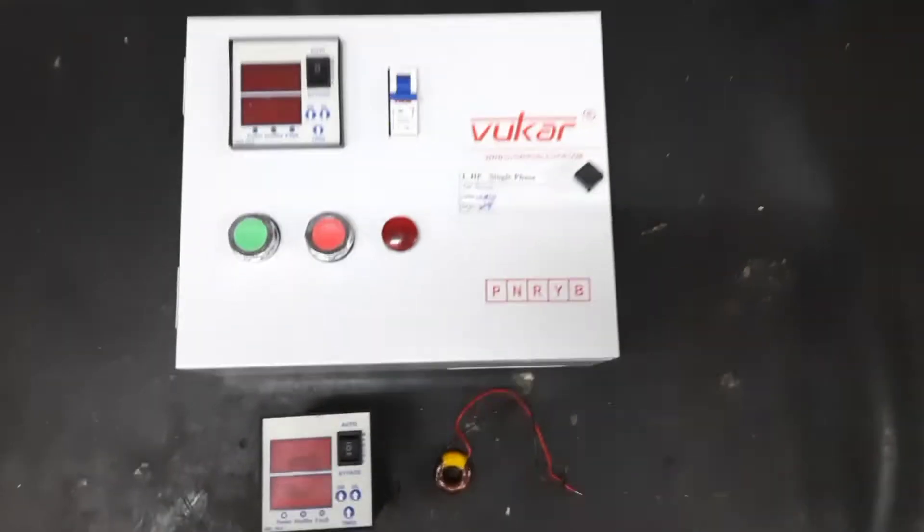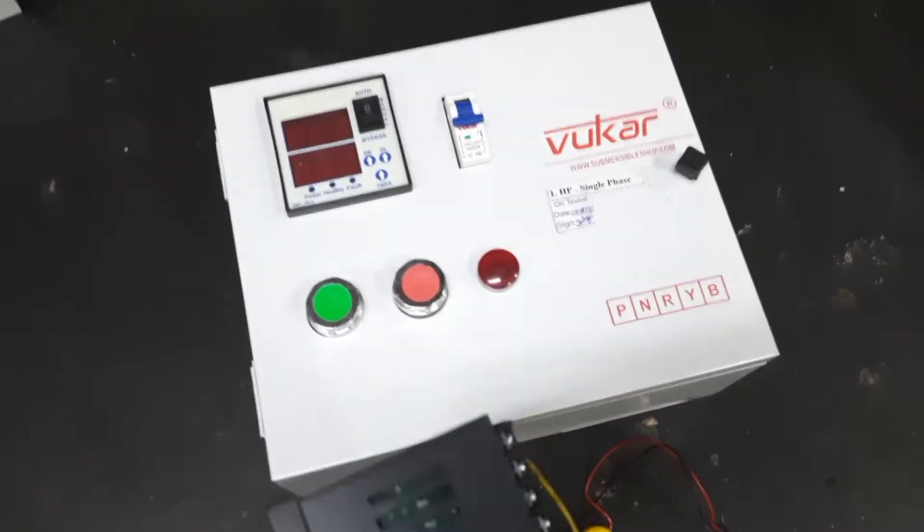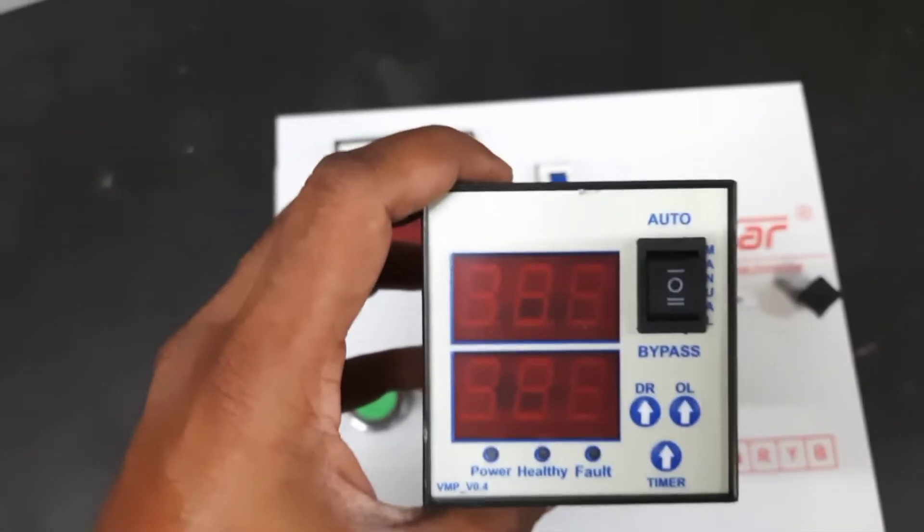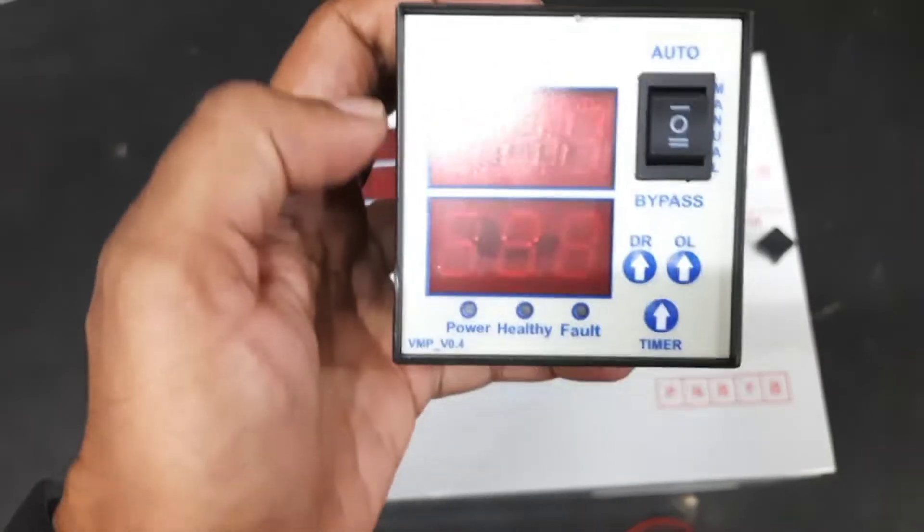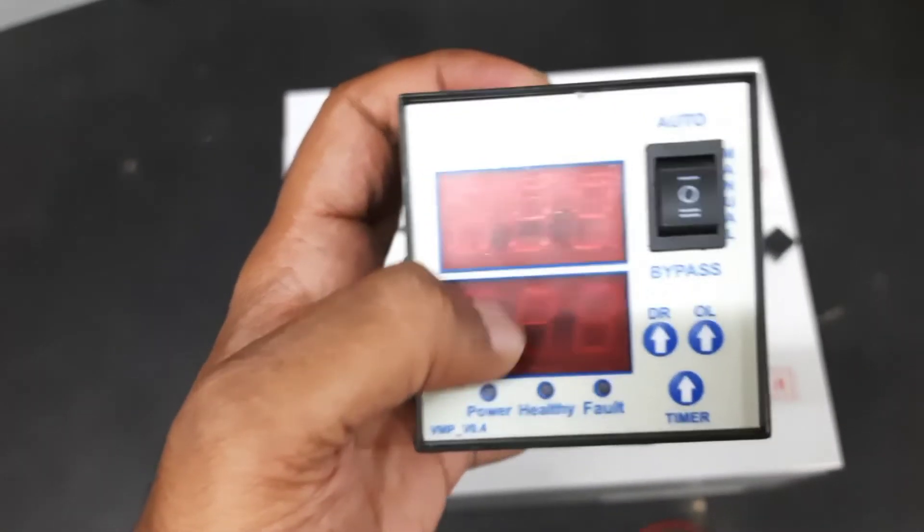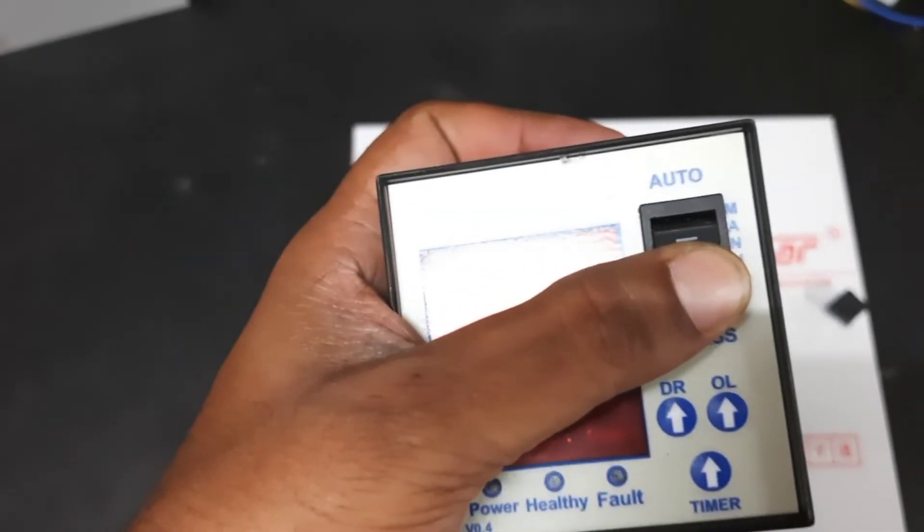Hello, today we'll see the installation of a single phase digital meter premium. We'll see how to connect this digital meter with the control panel. First, the digital meter has two display options: one is for ampere, the second one is for voltage. Here a switch is given.